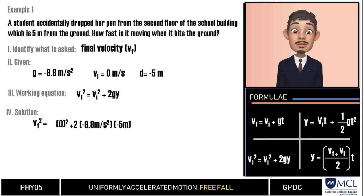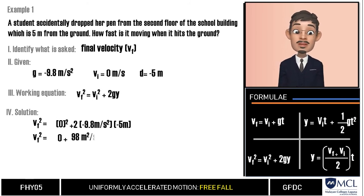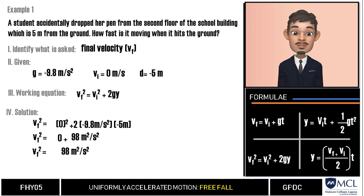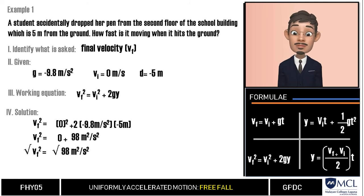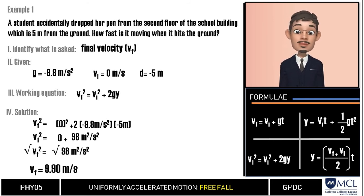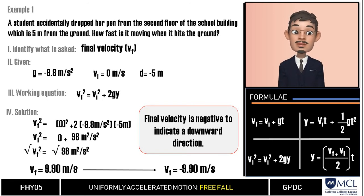Continuing the substitution, we multiply by negative 5 meters. Zero squared is zero, and 2 times negative 9.8 times negative 5 gives positive 98 meters squared per second squared. Since vf is squared, we take the square root of both sides. The square root of 98 meters squared per second squared is 9.90 meters per second. Since the pen is moving downward, our final answer is negative 9.90 meters per second, or 9.90 meters per second downward.